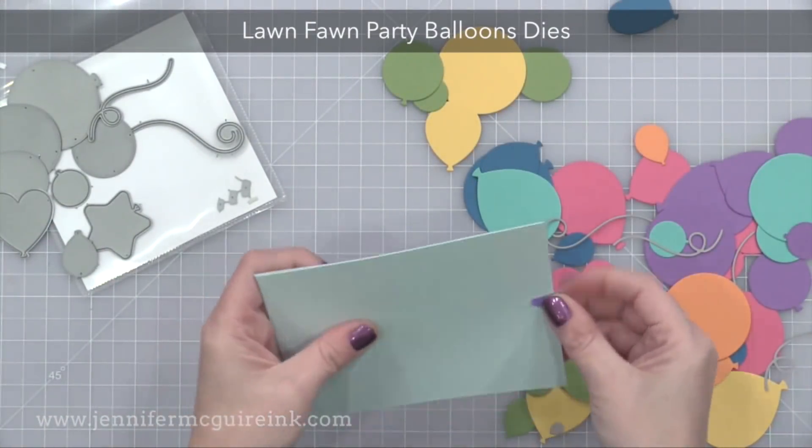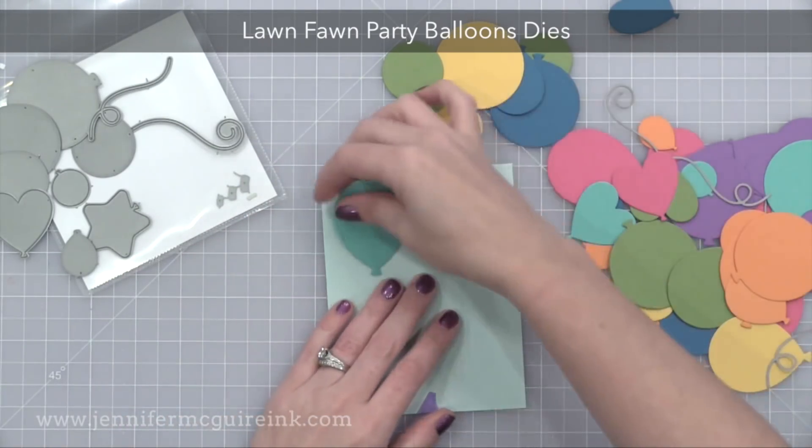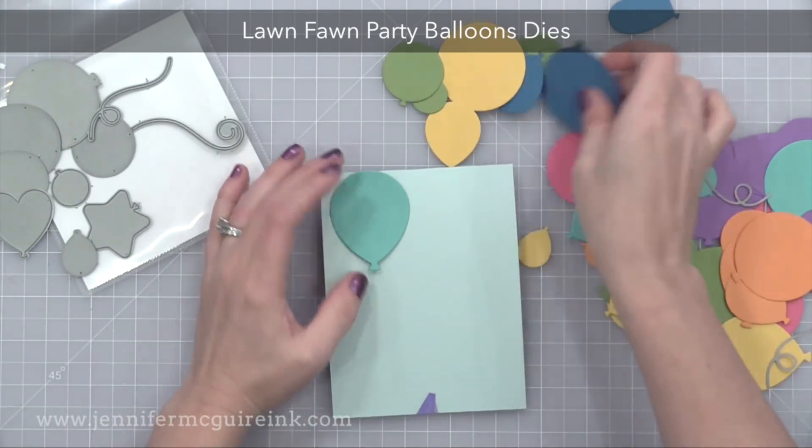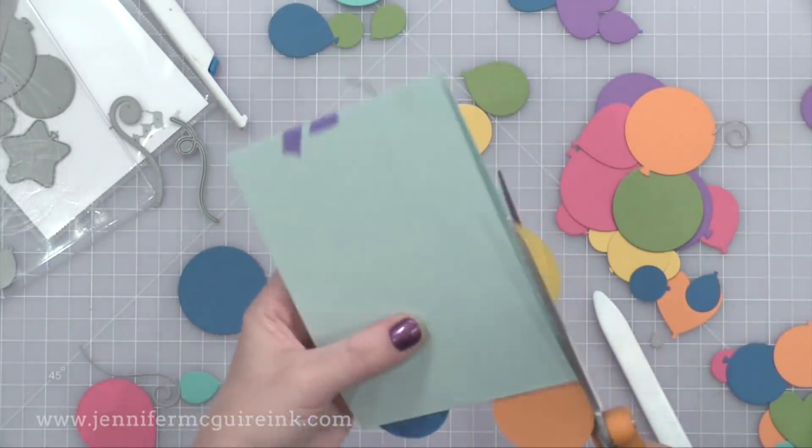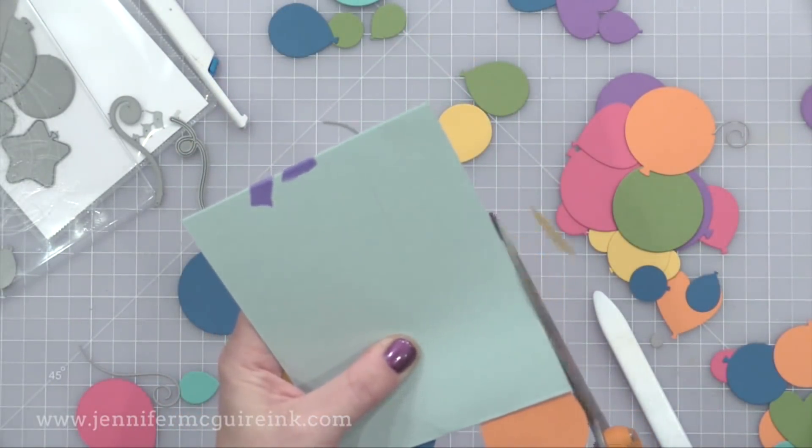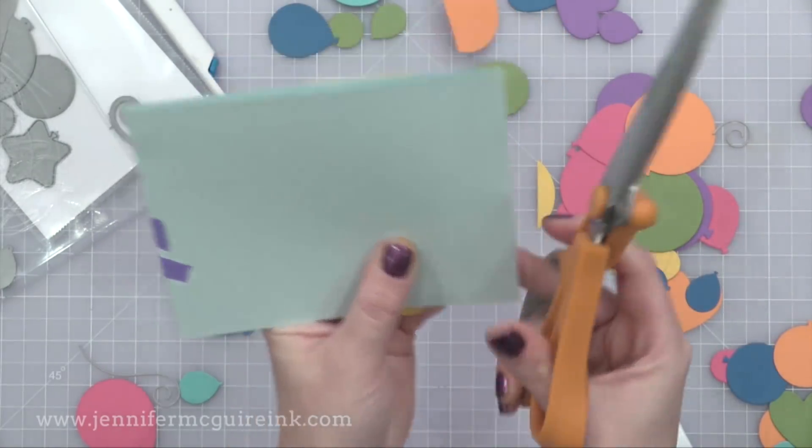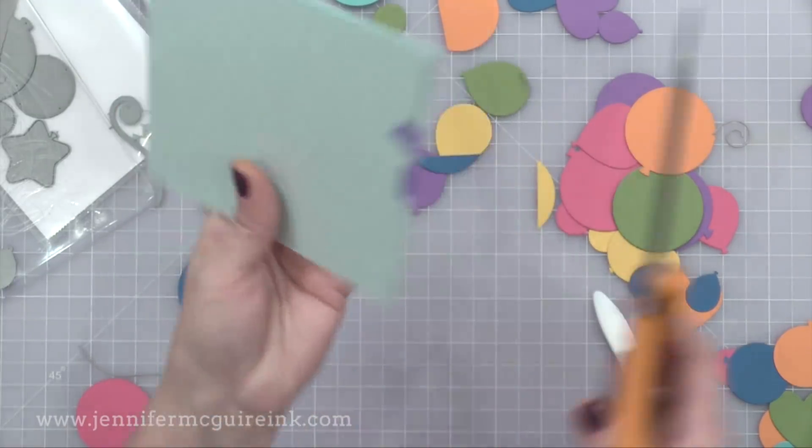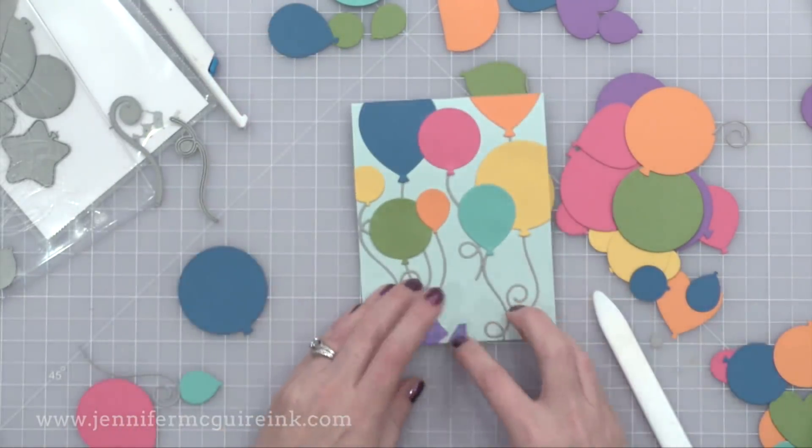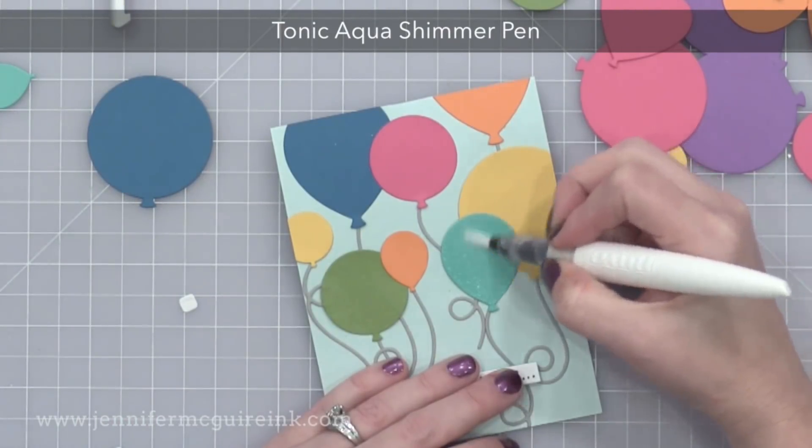To decorate my card I die cut a bunch of balloons from an older Lawn Fawn die set. This is the Party Balloons set and I used a bunch of different scrap pieces of card stock. I adhered a bunch of balloons onto the front of my card and even used the little string dies that are included in the set to create the strings on the balloons. After I adhered the balloons to the front I trimmed anything off that was hanging off the edge and then I used my aqua shimmer pen to add shimmer to the balloons.